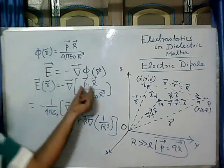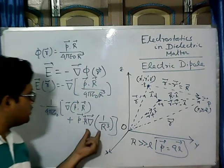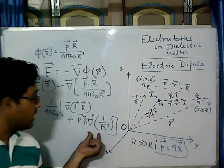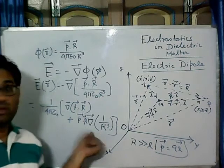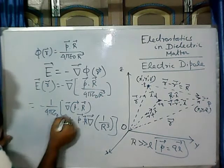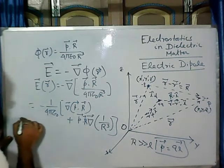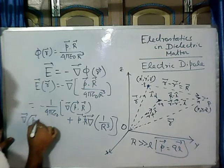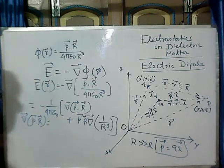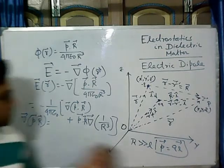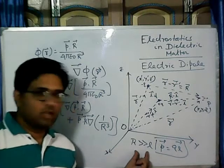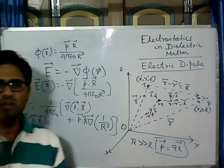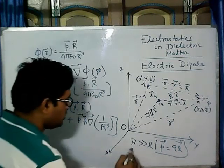So P dot R will come out and we have to operate this gradient on 1 by R squared. Now from vector calculus, the gradient of P dot R — here R is very large with respect to L, so L tends to 0.